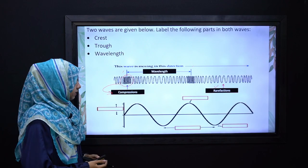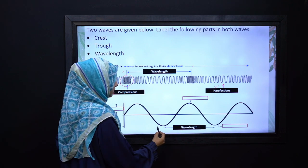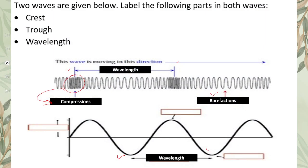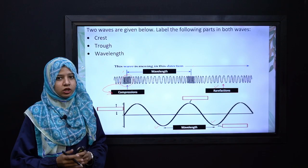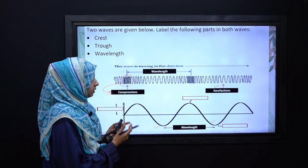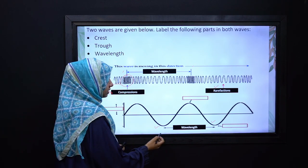Similarly, if we look at the second wave, the distance between two successive crests or troughs can be either trough or crest. But since in our given wave the trough is mentioned...